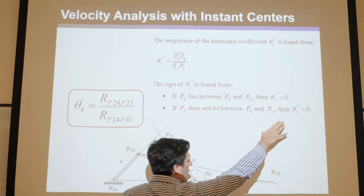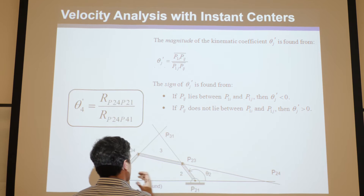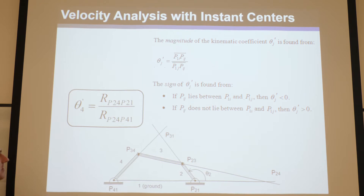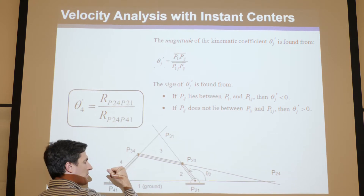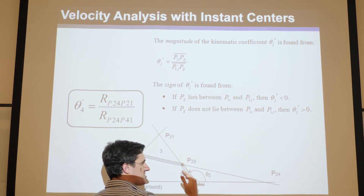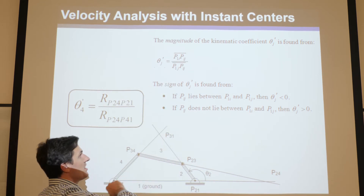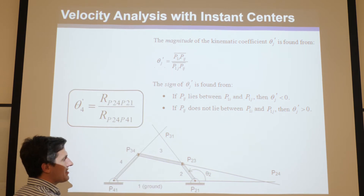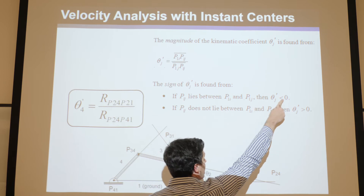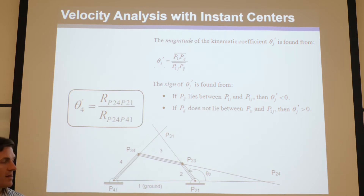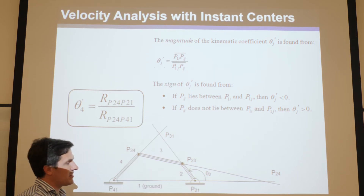If the instant center lies between the other two, the sign is positive, meaning the output and input move in the same direction. A positive kinematic coefficient means the ratio of output to input is positive — both going the same direction. Recall from our convention: if they move the same direction, the instant center must lie outside these limits. If it lies between them, the sign is negative, meaning when theta_2 is positive theta_4 is negative, or vice versa.